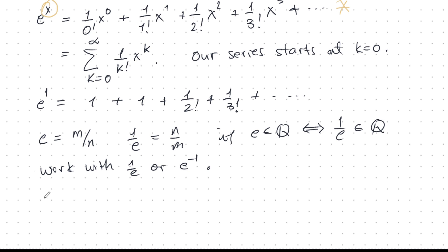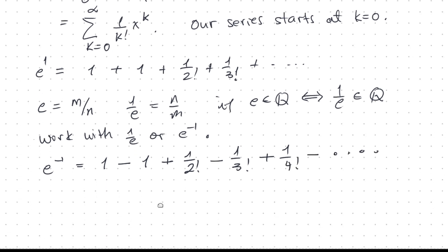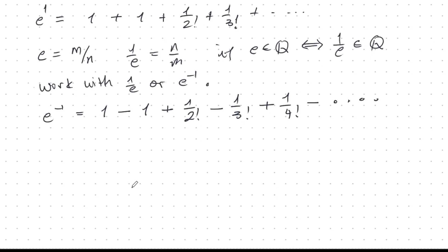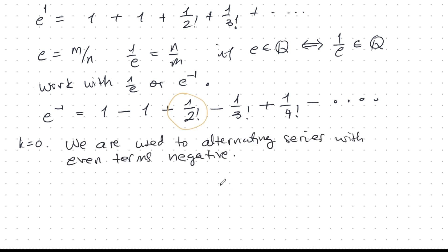So let's plug in minus 1. We get e to the minus 1 equals 1 minus 1 plus 1 over 2 factorial minus 1 over 3 factorial plus 1 over 4 factorial, minus, and so on. The problem is that because we started at k equals 0, the even-indexed terms are positive and the odd-indexed terms are negative — the opposite of the usual convention in alternating series theory. But this is very easy to fix.